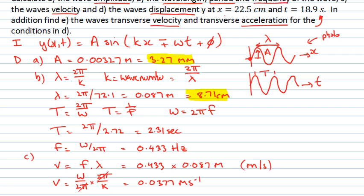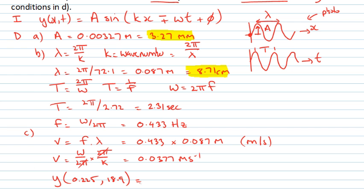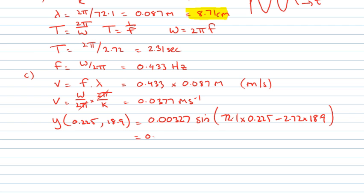In part d we're asked to find the wave displacement at 22.5 centimeters and 18.9 seconds. So it's basically about just putting those numbers into my expression here. 0.00327 times the sine of, and here if we evaluate this we get 16.2225 minus 51.408.